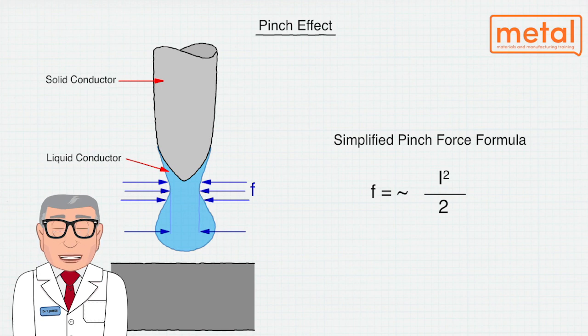There are four types of metal transfer: spray, globular, short circuit, and pulse, where the mode of transfer is directly related to the square of the arc current.